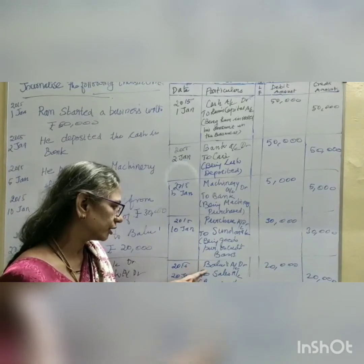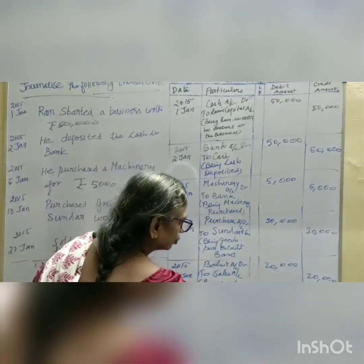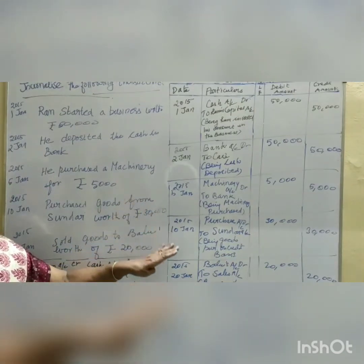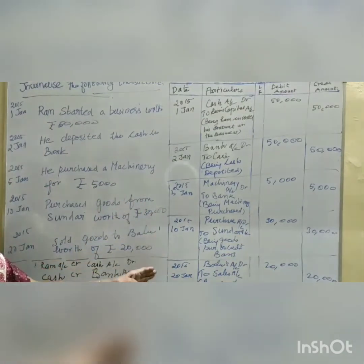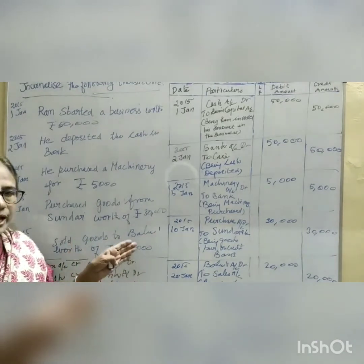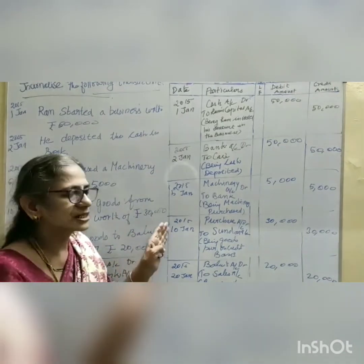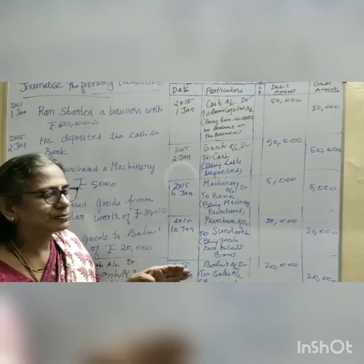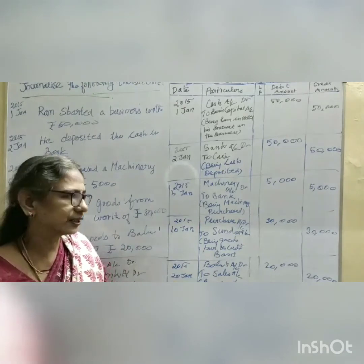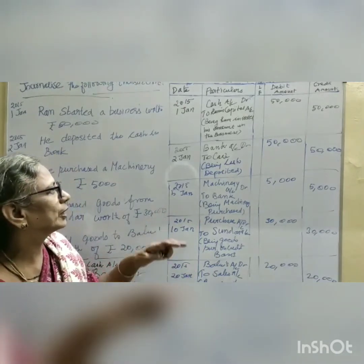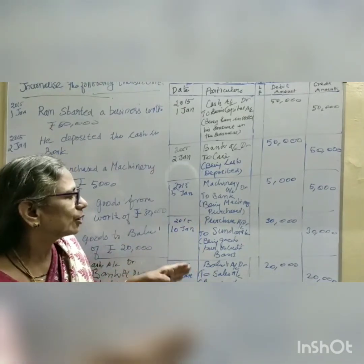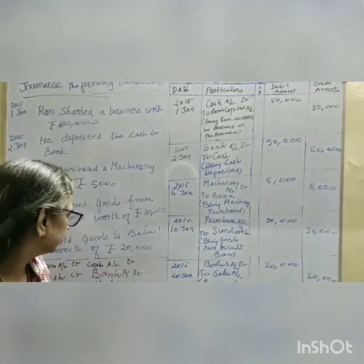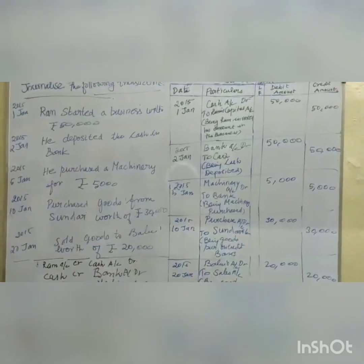Like this, we have to practice more journal entries. Here I have given simple five journal entries because the board is not sufficient. We need to do journal entries for nearly 20 to 30 transactions in a month. By doing more practice we will get thorough with the subject. Tomorrow we will continue with the next class.